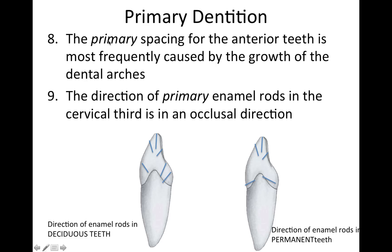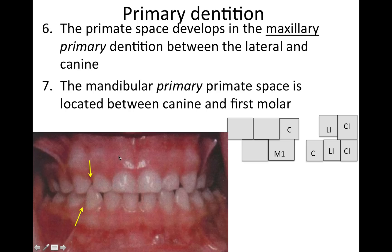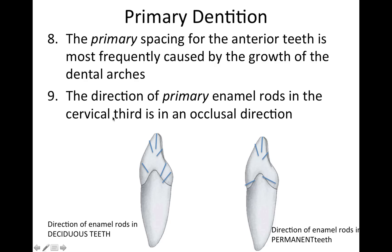The primary spacing for the anterior teeth is most frequently caused by the growth of the dental arches. The dental arch is growing and you're going to traditionally see some spacing in the primary dentition.